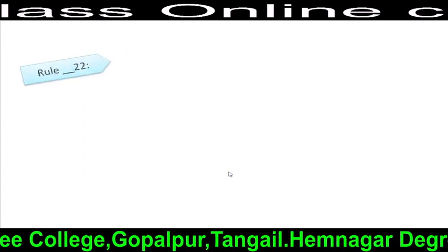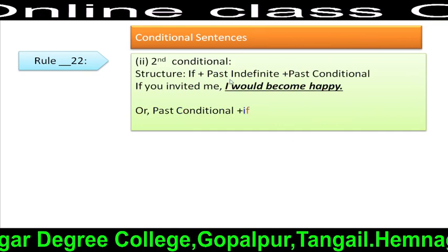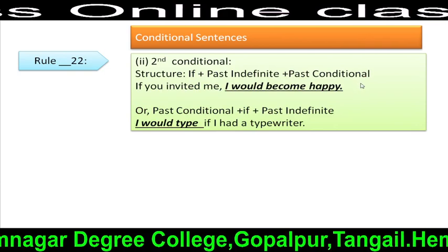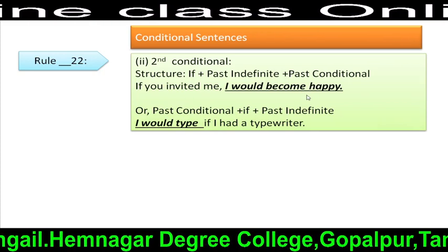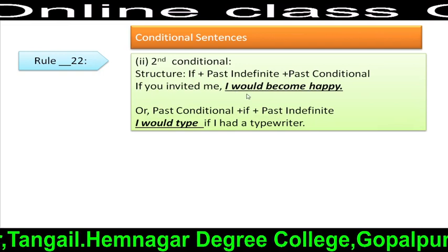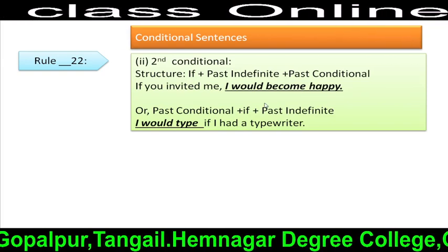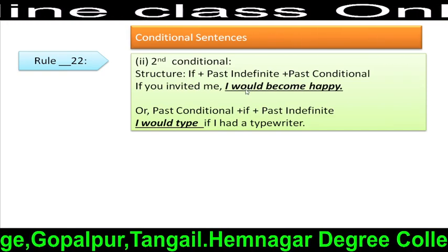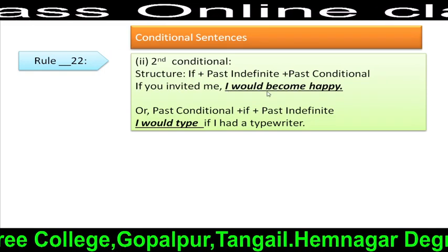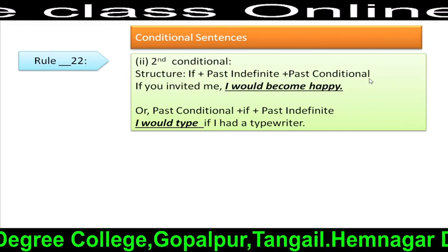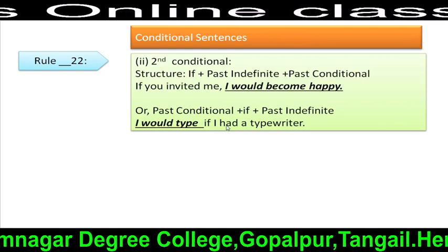Rule 22: Second conditional structure: If + past simple tense + past conditional. In this conditional, we have to complete the incomplete sentence using past conditional, which refers to: subject + modal verb in past form (would/could) + V1 + extension. For example: 'If you invited me, I would become happy.' Or: 'I would try if I had a typewriter.'